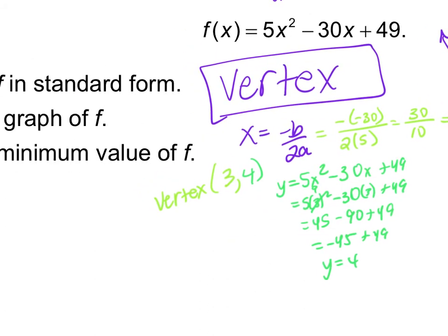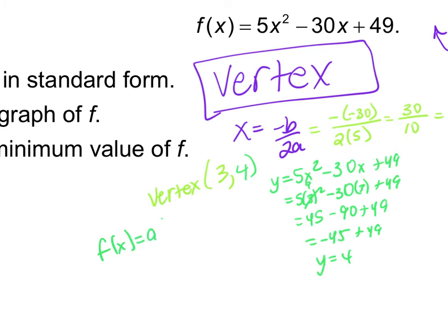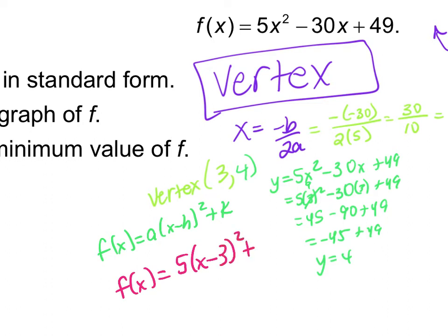To write this in vertex form — f(x) = a(x - h)² + k — my a term is 5, h is 3, k is 4. So vertex form is f(x) = 5(x - 3)² + 4. You really can find a ton of information just by finding the vertex. Does that make sense?